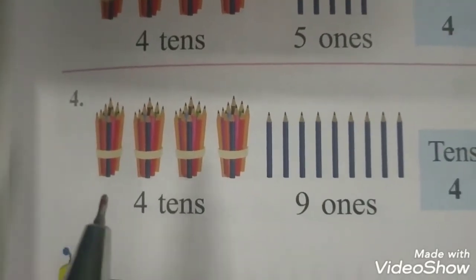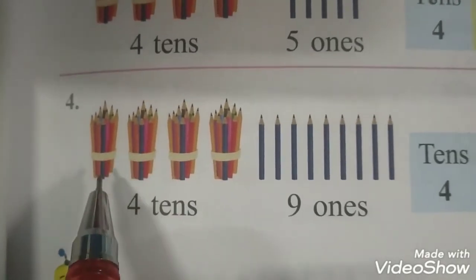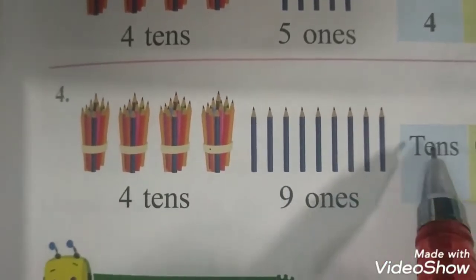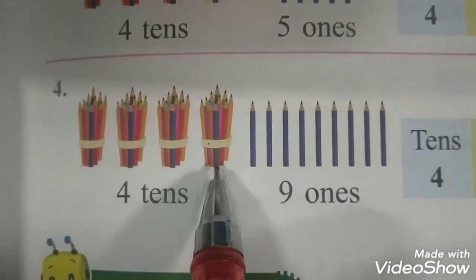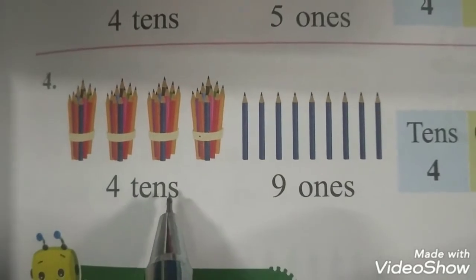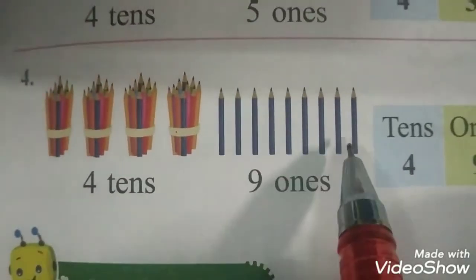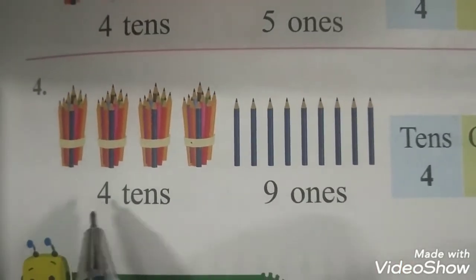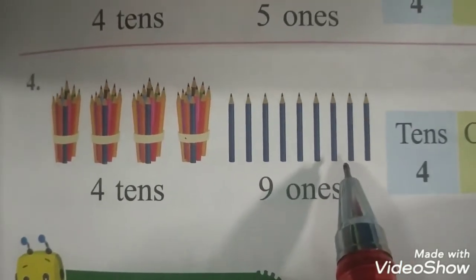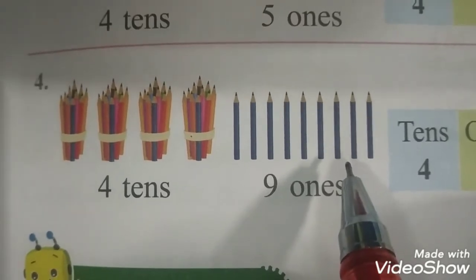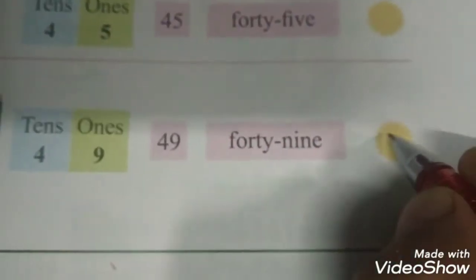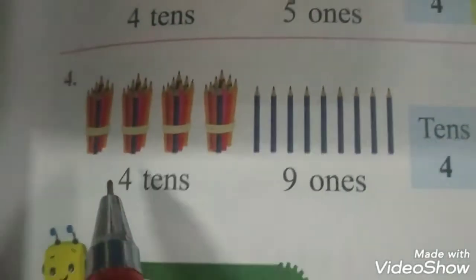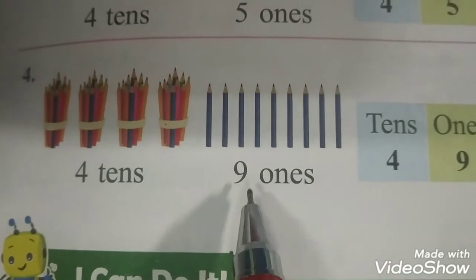Now look here. Here we have 4 bundles of tens, 4 bundles of tens and then some loose. If we count them, these are 4 bundles of tens. Now we are having here 4 tens plus 9 ones. 4 tens plus 9 ones. What will this become? This will become 49. 4, 9, 49. 4 bundles of tens plus 9 ones.